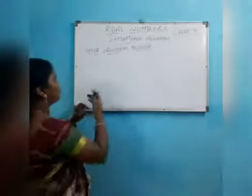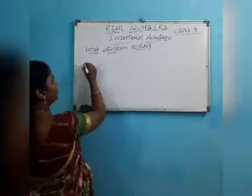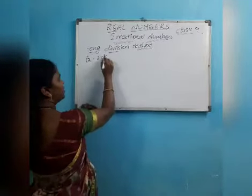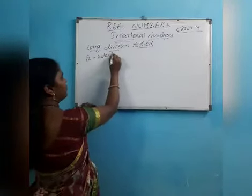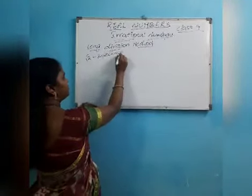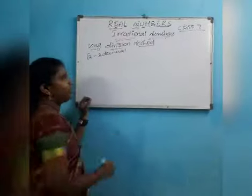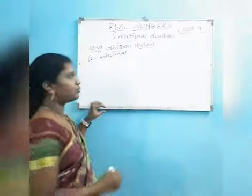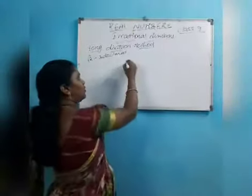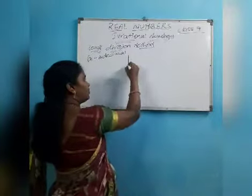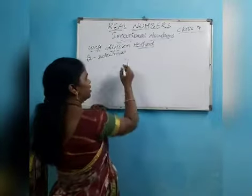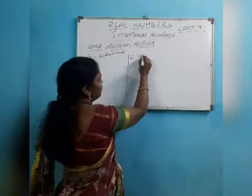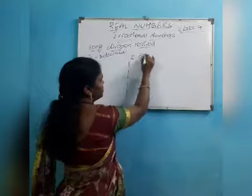Let us see how to find the long division method for root values. Let us take root 2. I will find the value up to 3 decimal places.